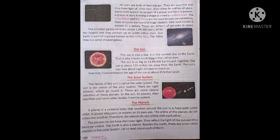The Solar System: The family of the sun is called the solar system — sury ke parivar ko saur mandal kaha jaata hai. The sun is the center of the solar system. There are 8 planets which go round it. There are also some natural satellites of these planets. So the sun, its planets, their satellites and some other bodies together form the solar system.